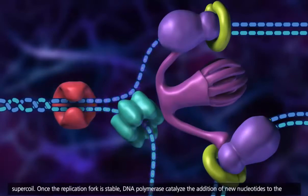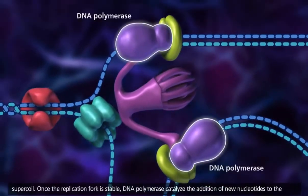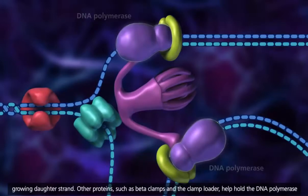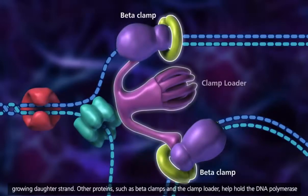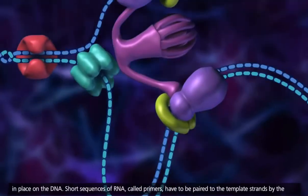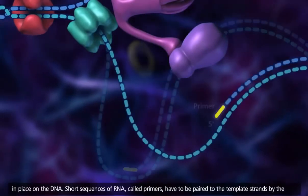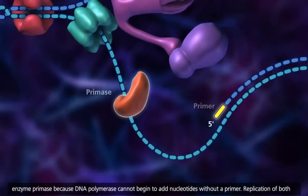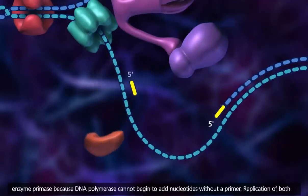Once the replication fork is stable, DNA polymerase catalyzes the addition of new nucleotides to the growing daughter strand. Other proteins, such as beta clamps and the clamp loader, help hold the DNA polymerase in place on the DNA. Short sequences of RNA called primers have to be paired to the template strands by the enzyme primase because DNA polymerase cannot begin to add nucleotides without a primer.